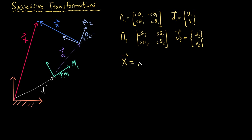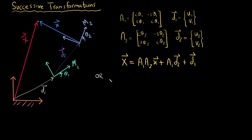Writing it out more explicitly, a1 is a rotation matrix of theta1, a2 is a rotation matrix of theta2, and d1 and d2 are (u1, v1) and (u2, v2) respectively. From the previous videos we derived the equation: big X equals a1·a2·x plus a1·d2 plus d1, where the last two terms give the displacement and a1·a2 gives the rotation.